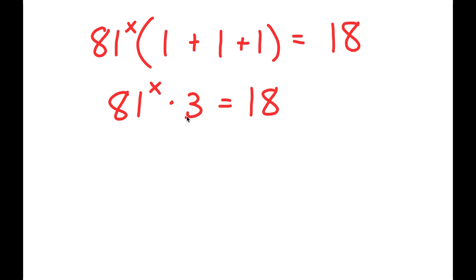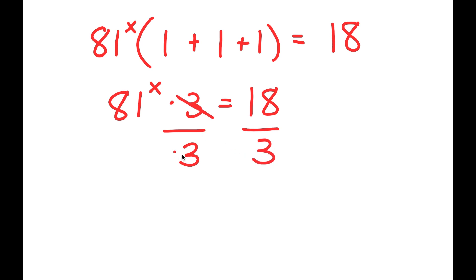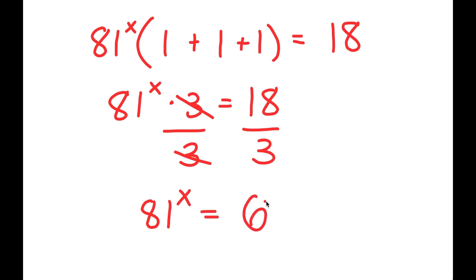And now, if I divide both sides by 3, these two cancel out, and I get 81 to the power of x is equal to 18 divided by 3, which is 6.